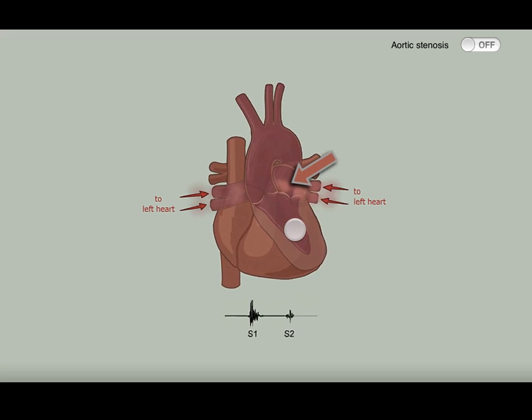The little cloud shows the path of blood flow through the left side of the heart as blood returns from the lungs and then moves through the left atrium and left ventricle before being ejected into the aorta and onto the rest of the body.